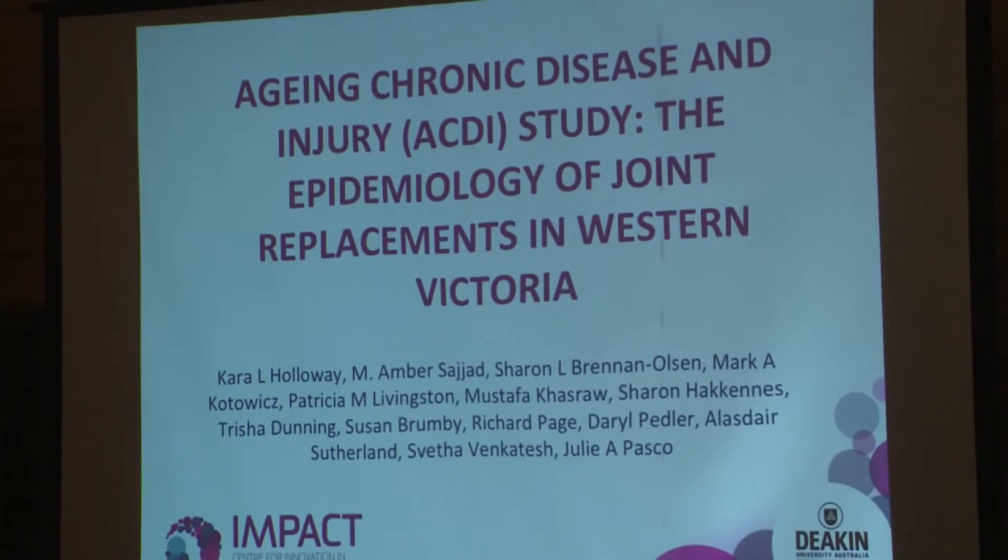I'll try to be quick since we're running short of time. I'm presenting some data on joint replacements from the Aging, Chronic Disease and Injury Study. As Julie and Umber presented before, it's the same type of study, so hopefully I won't have to go into too much detail. The data from this study comes from the National Joint Replacement Registry, which is very complete because they cross-reference. I've collected data for the region of western Victoria for the years 2011 to 2013.